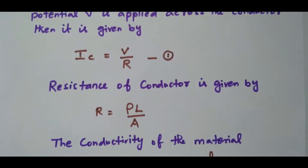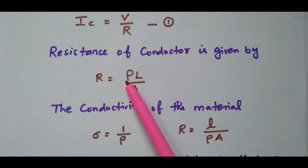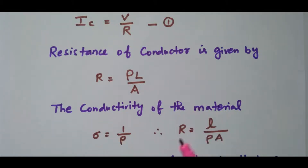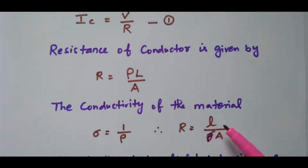The resistance of the conductor is given by R equal to rho L by A, where rho is resistivity, L is the length, and A is the area of the conductor. Conductivity sigma is nothing but 1 by rho — both are inversely proportional. So R can be written as L divided by sigma A.